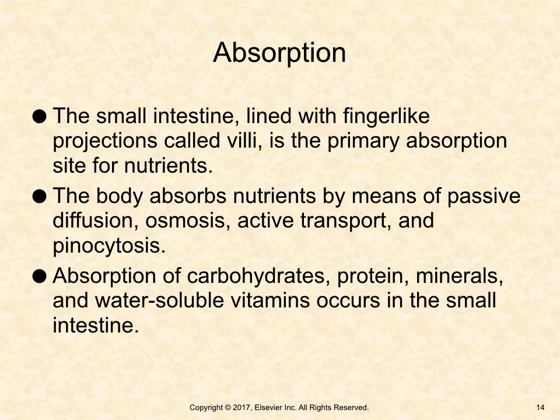The small intestine, lined with finger-like projections called villi, is the primary absorption site for nutrients. The body absorbs nutrients by means of passive diffusion, osmosis, active transport, and pinocytosis. The absorption of carbohydrates, protein, minerals, and water-soluble vitamins occurs in the small intestine.